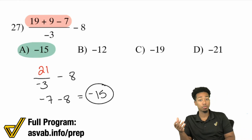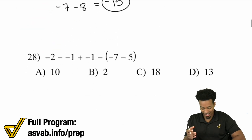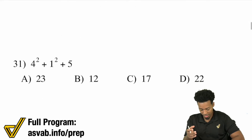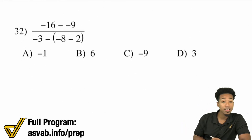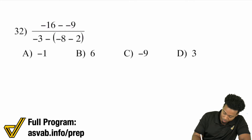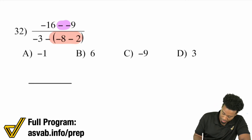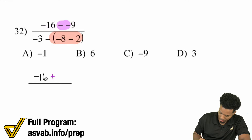If you just finished the three-step operations, notice this is really just one more step — what makes things complicated is just how many little steps you're dealing with. Looking at the next example with 32: I immediately notice a double negative in the numerator and a group in the denominator. The double negative — negative 16 minus negative 9 — becomes negative 16 plus 9. In the denominator: negative 3 minus negative 8 minus 2, which is negative 10.